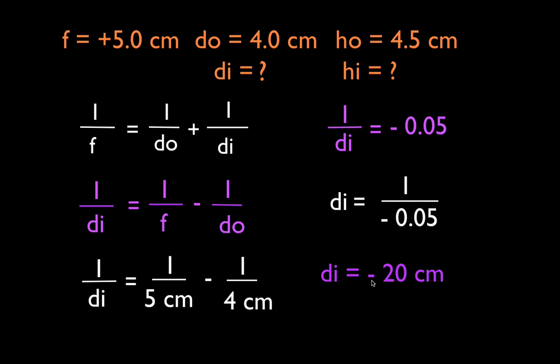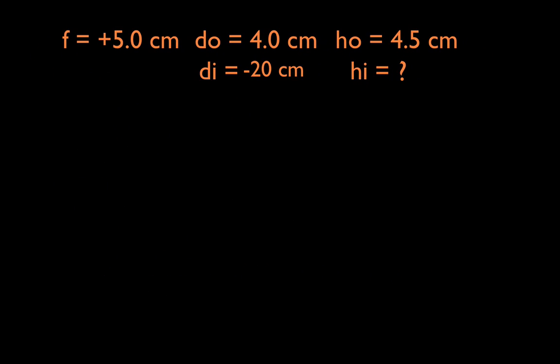That minus sign tells you that the image is on the other side of the mirror and that we want it to be on the other side because we know when we're inside of F, the image is going to be on the other side. So we now have the image distance, minus 20 centimeters, and now we can get the image height.